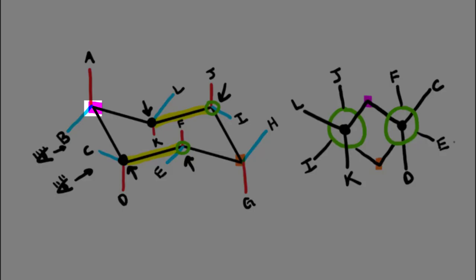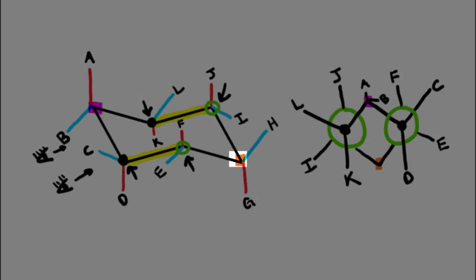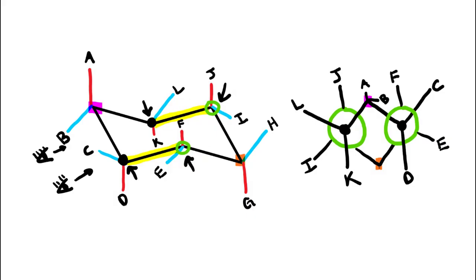Now let's focus in on the headrest. On the headrest, we have the letter A going axial up and the letter B going equatorial down. So we put in the letter A going up and the letter B going down — you can either put it straight down or try to show it slanted down. Then if we look at the footrest, we have the letter G going axial down, so we put the letter G straight down. And then we have the letter H that is going equatorial up, so it's kind of slanted up.